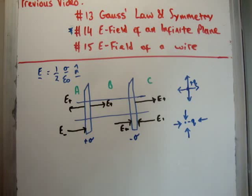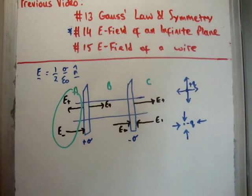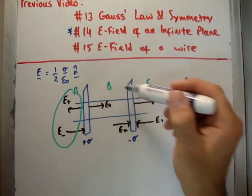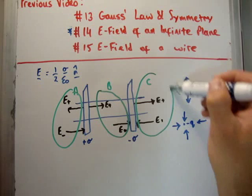So in region A, we see that they're going to cancel because their magnitude is the same. In region B, they're going to add because they're in the same direction. And region C, they're going to cancel.